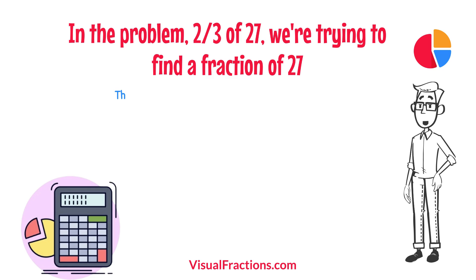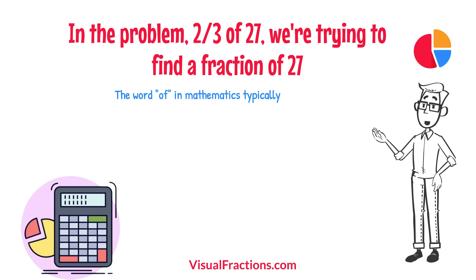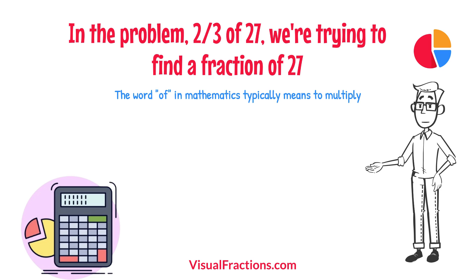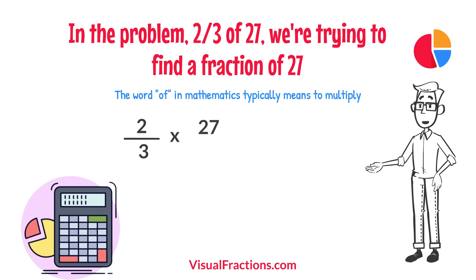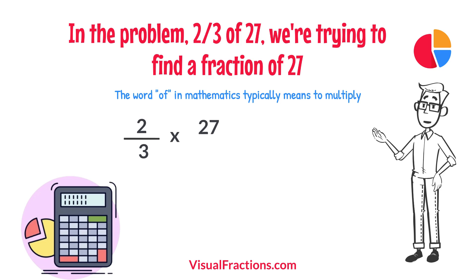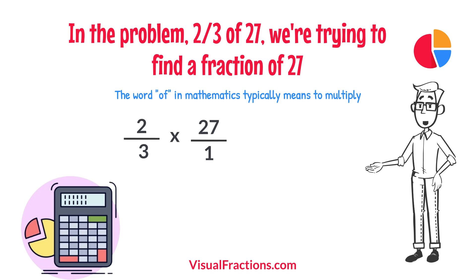The word 'of' in mathematics typically means to multiply, so we rewrite our problem as multiplication: two-thirds times 27. To simplify the calculation, we first convert our whole number into fraction form, writing 27 as 27 over 1.